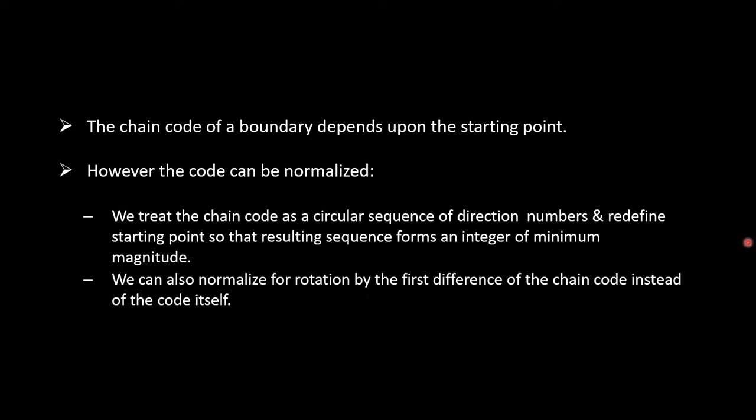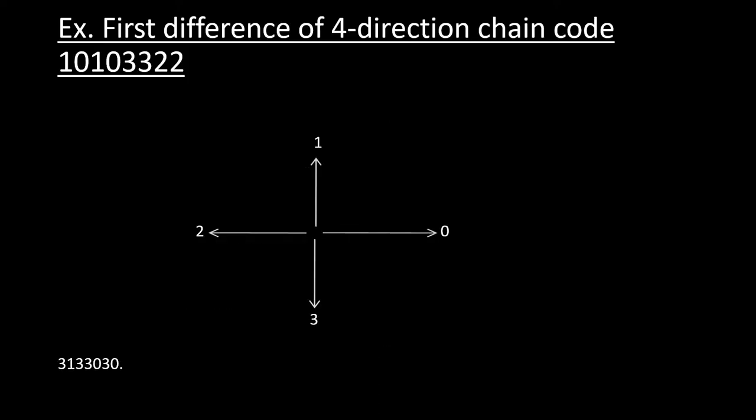The accuracy of the resulting code representation depends on the spacing of the sampling grid. Considering the circular sequence, let us consider an example: first difference of 4-direction chain code 10103322. Considering the circular sequence, the first element is calculated by subtracting last and first components.